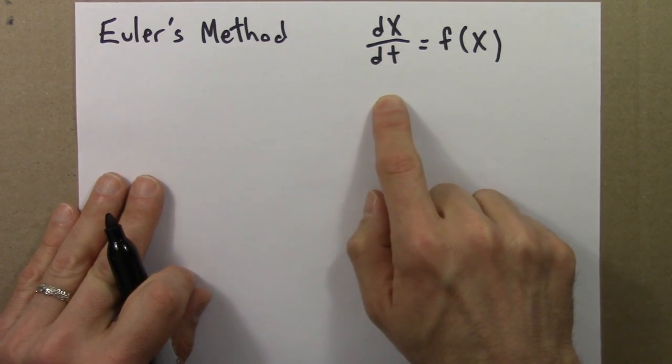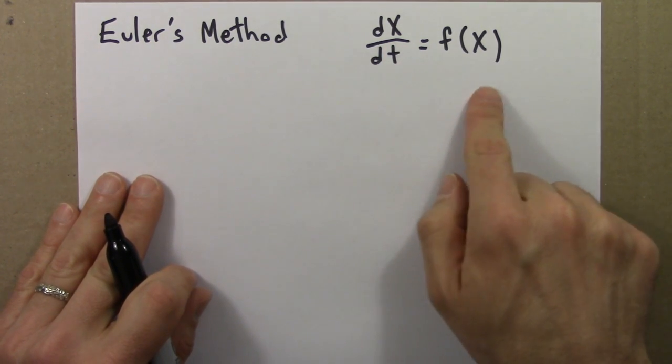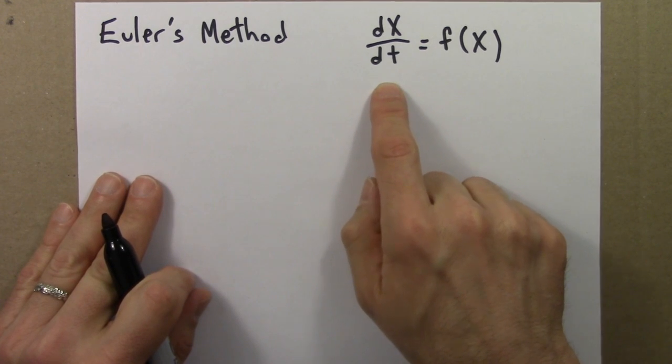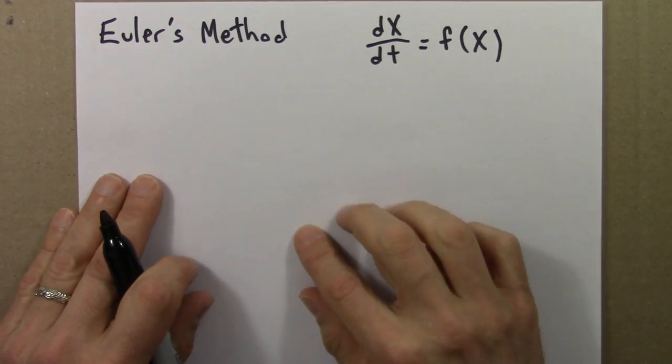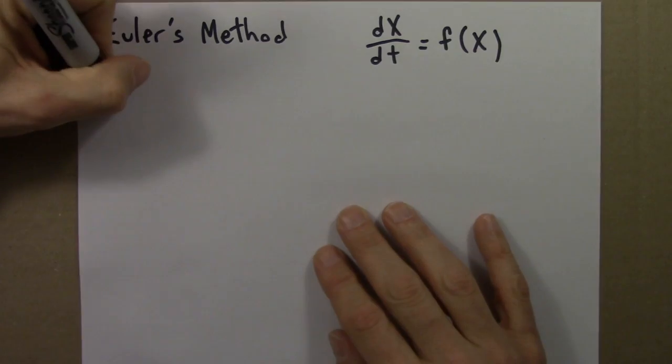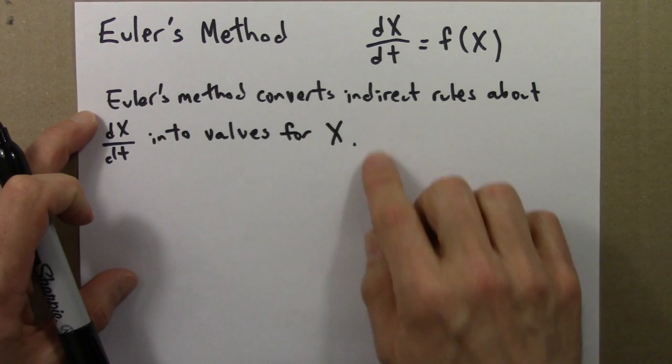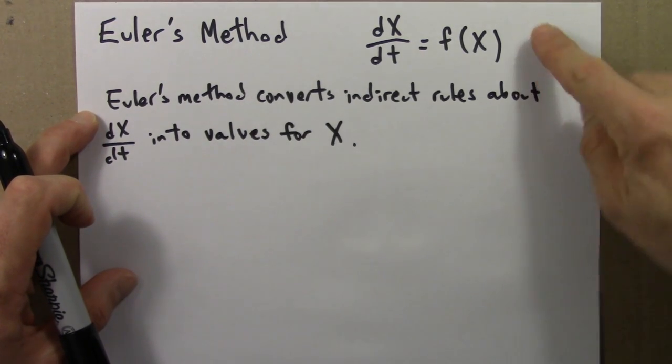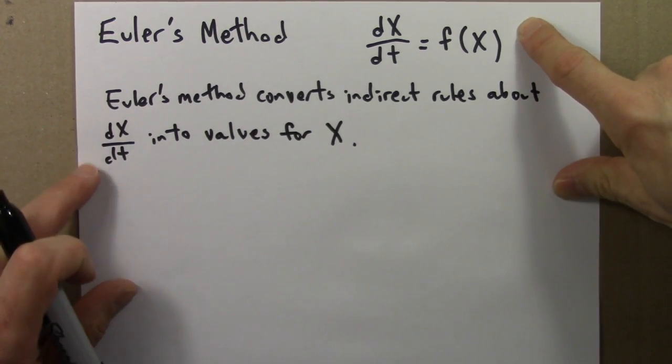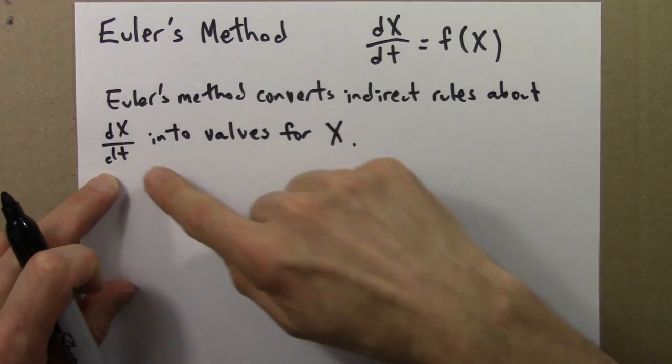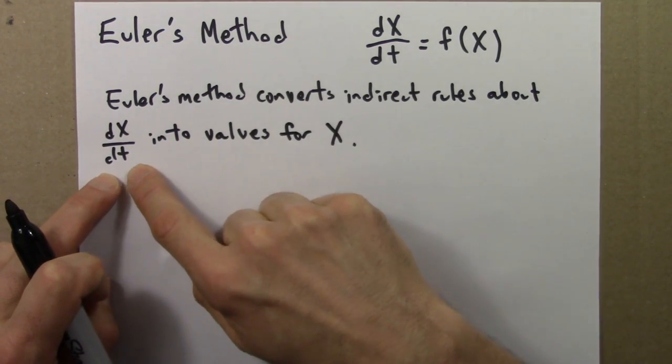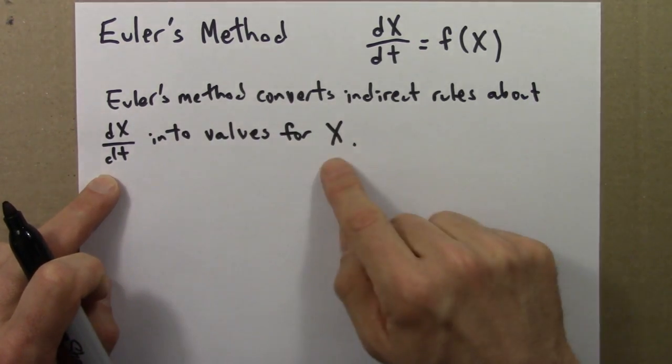Euler's method is just a way to go from this indirect information about the derivative to the direct information about x. So Euler's method converts this indirect rule, the differential equation involving the derivative and the rate of change, and converts that into values for x.